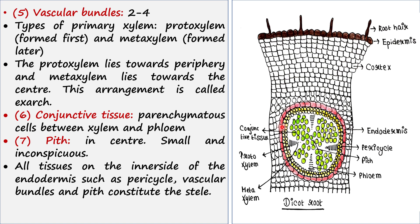Next to the pericycle you can find vascular bundles. Vascular bundles contain xylem and phloem. In this picture we can find two to four vascular bundles — here we have four — arranged in the pattern: phloem, xylem, phloem, xylem.